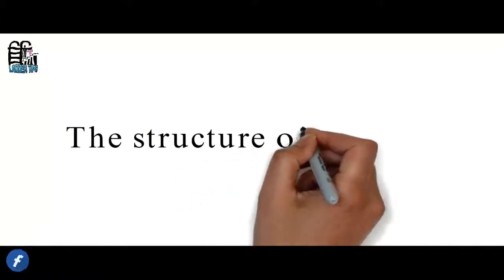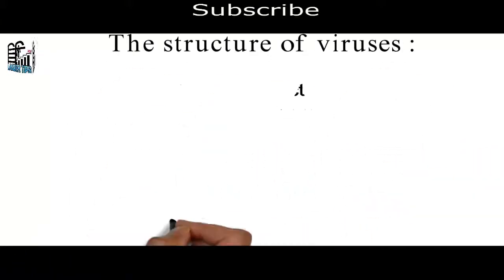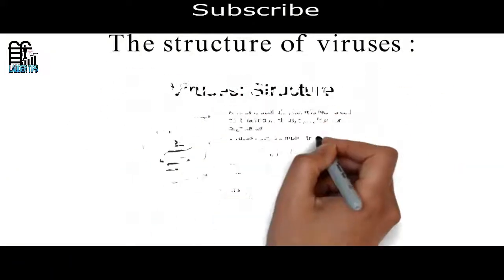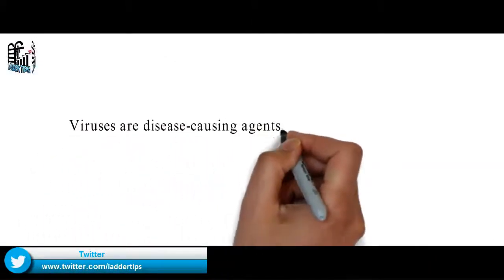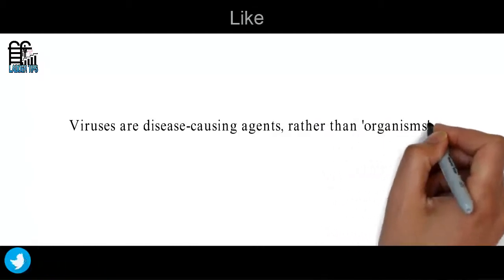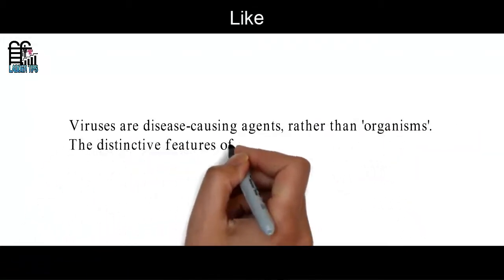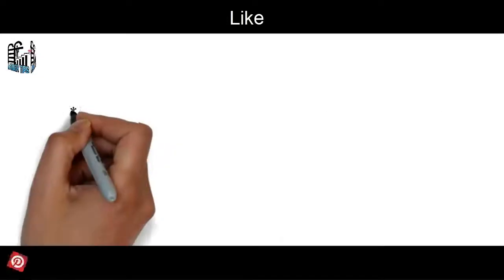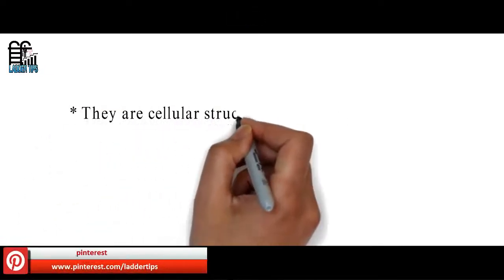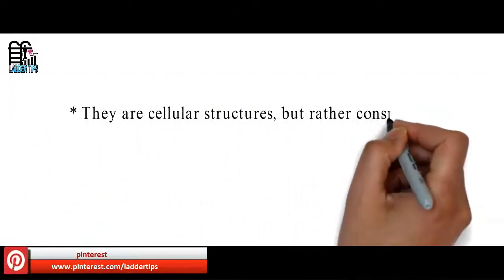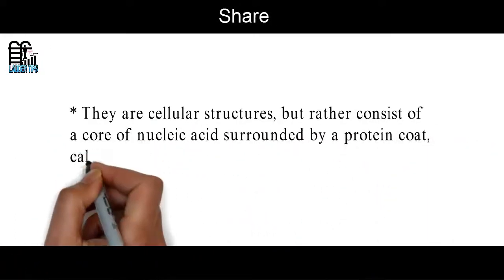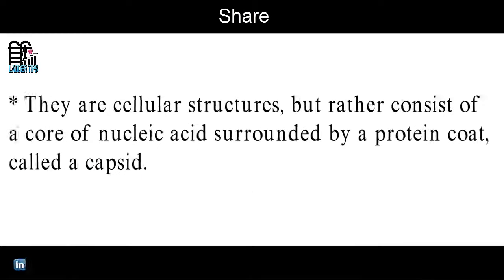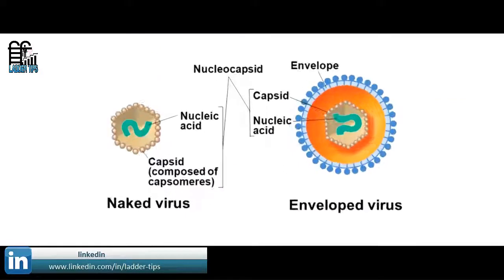The structure of viruses. Viruses are disease-causing agents rather than organisms. The distinctive features of viruses are: they are not cellular structures, but rather consist of a core of nucleic acid surrounded by a protein coat called a capsid.